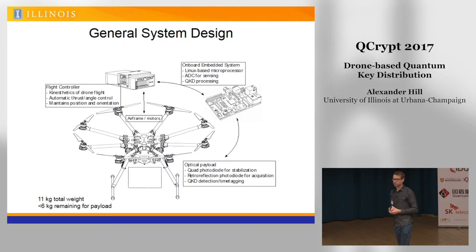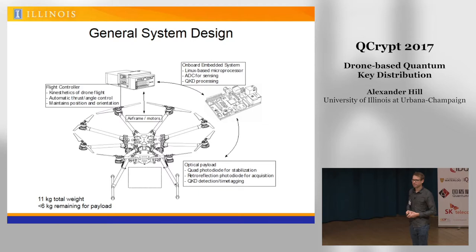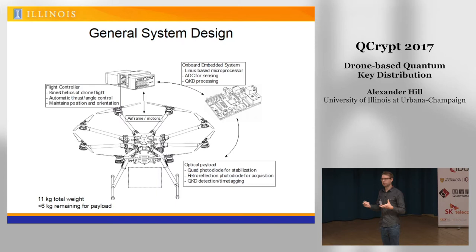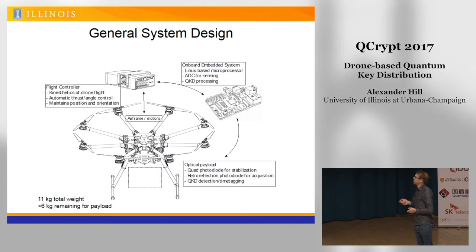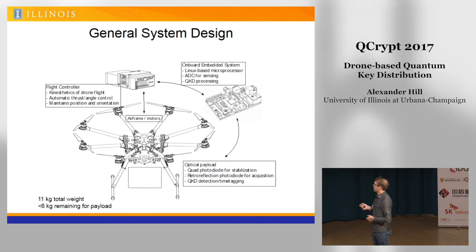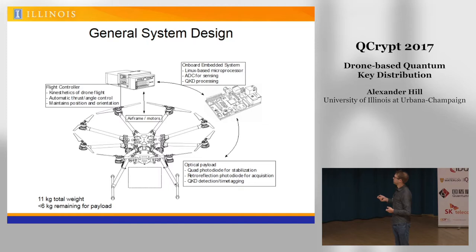To make the drone system work, you typically need a large airframe — the one we're using is about five feet across. The whole system can be at most about 11 kilograms, but about half of that is used up by the body and battery, leaving about four to six kilograms for payload. What flies on there is a flight controller responsible for the drone's kinesthesia — gyroscopes and orientation — plus a computer responsible for classical communication, stabilization, and the other parts of the protocol.